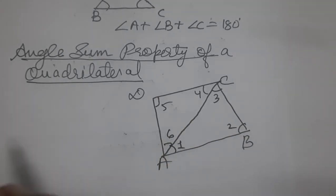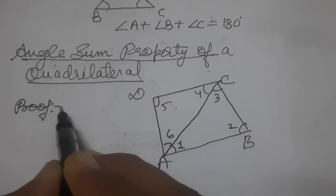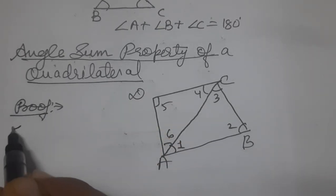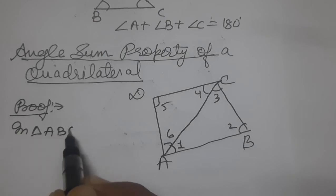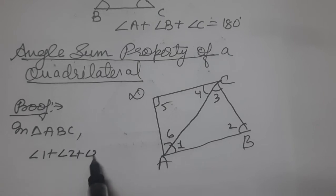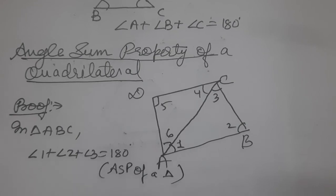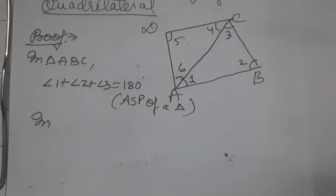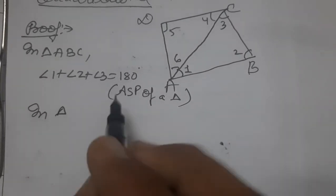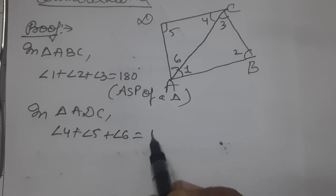Proof: In triangle ABC, the sum of three angles is 180 degrees — angle 1 + angle 2 + angle 3 = 180°, by the angle sum property of a triangle. Now consider triangle ADC: angle 4 + angle 5 + angle 6 = 180°, by the same reason — angle sum property of a triangle. Label these as equation 1 and equation 2.